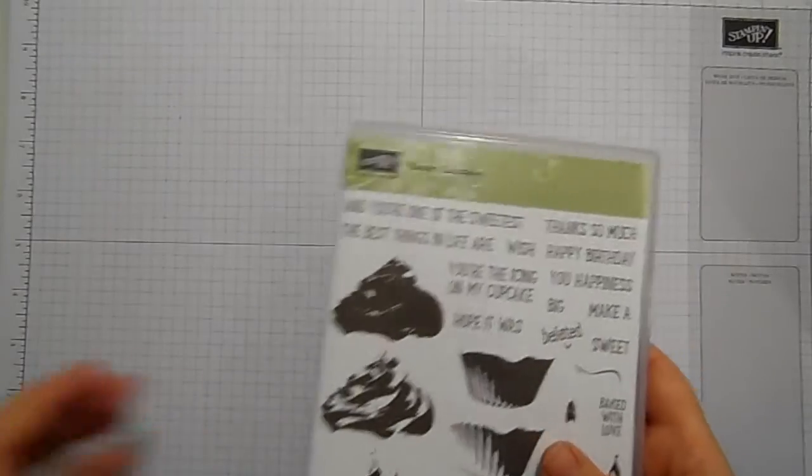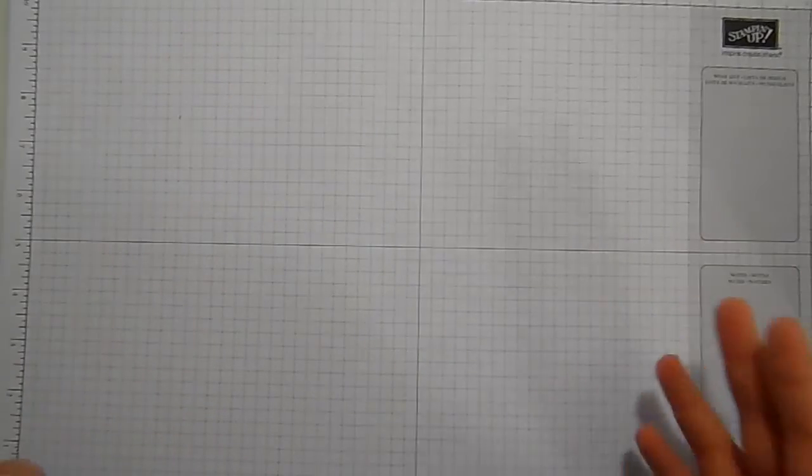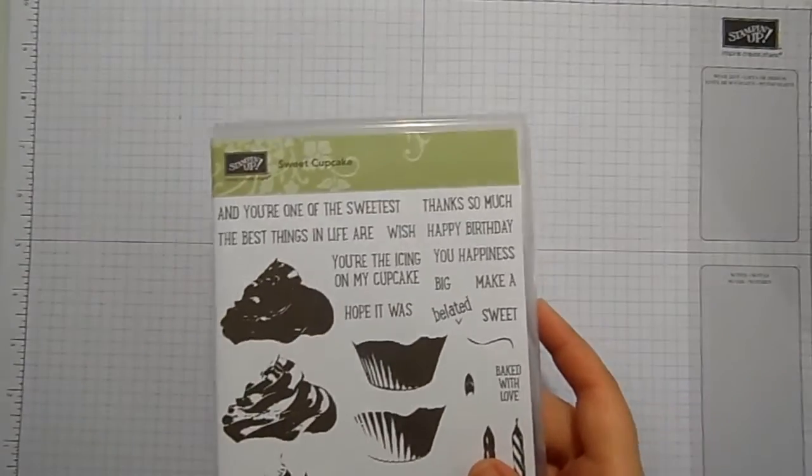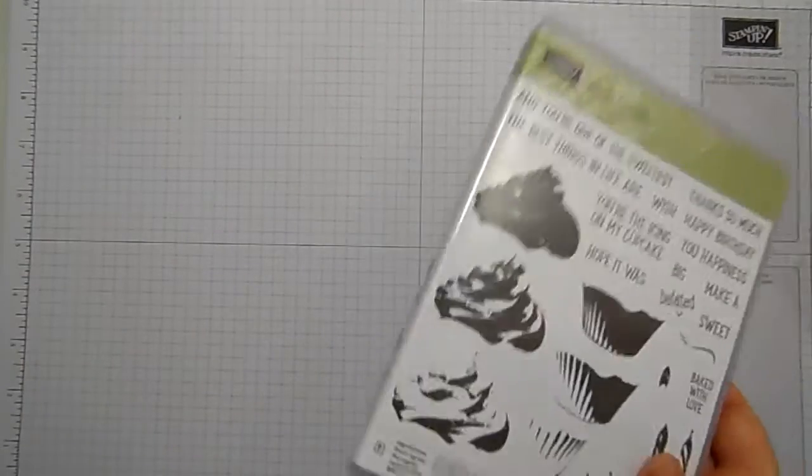So that is my class. I do two classes a month. This is the class for the second half of January. So shall we get on with making a card? Because we're already three minutes in and I'm waffling.